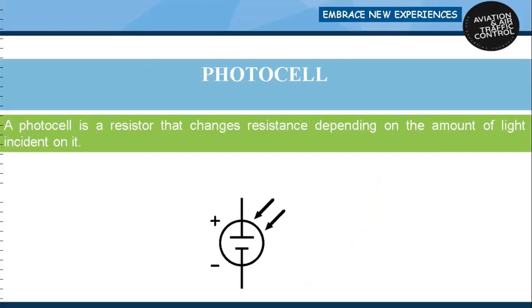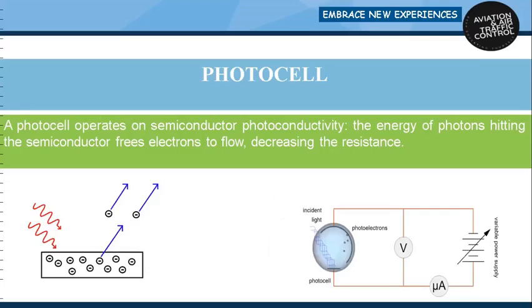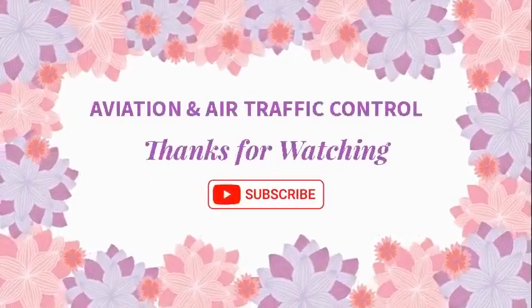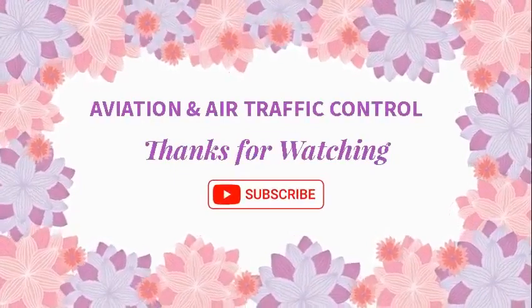A photocell is a resistor that changes resistance depending on the amount of light incident on it. A photocell operates on semiconductor photoconductivity — the energy of photons hitting the semiconductor frees electrons to flow, reducing the resistance. In the dark, a photocell has a resistance of approximately 500 kilohms, and in bright light the resistance drops to approximately 10 kilohms.